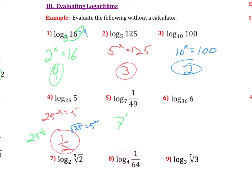7 to what power is 1 over 49? Well, I know 7 squared is 49, but 49 got flipped to the bottom, so it's going to have to be a negative 2nd power, so negative 2. 36 to what power is 6? Well, again, same square root logic there, so x would equal 1 half.